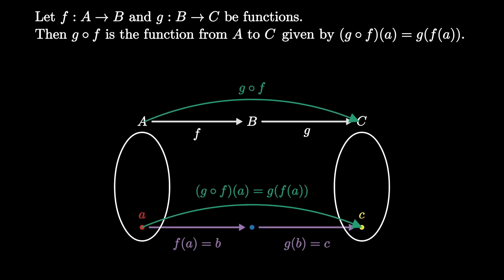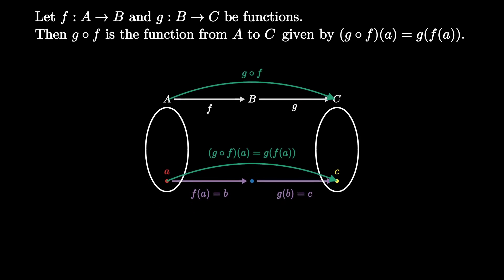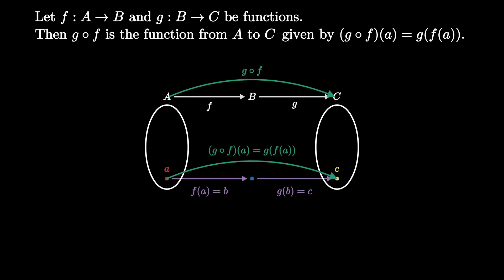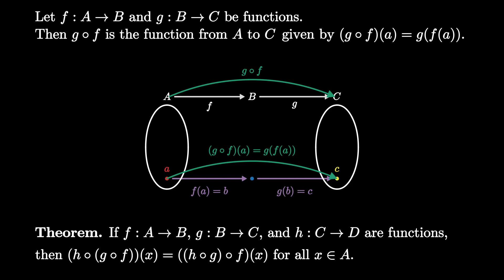Let's see this definition in action as we prove that function composition is associative. This means that if we have three functions f, g, and h, then the composition of h with g composed f is equal to h composed g composed with f. In particular, no matter what element from the domain a we plug into these functions, the outputs will be equal.